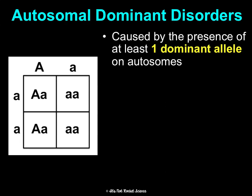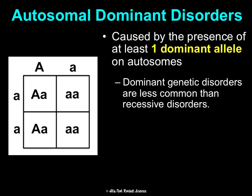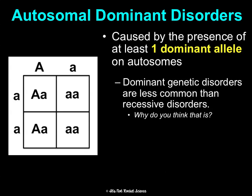Autosomal dominant disorders are caused by the presence of at least one dominant allele on the autosomes, and they're actually less common than recessive disorders. If it's dominant, to give it to your kid, you must have it — so it's not as much of a surprise. At least one parent has to have the disease to pass it on. A parent with one affected allele and one normal allele crossed with a normal parent could have 50% affected and 50% normal children.